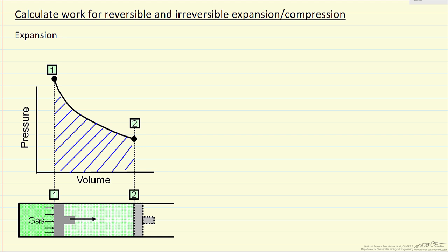First we'll look at expansion and a reversible process. Work in general for both types of processes is minus the integral of the external pressure times the differential volume change. Because we're talking about a reversible process, the external pressure is identical to the pressure inside the piston — the pressure of the gas — so this becomes the integral of the pressure of the gas times the change in volume.